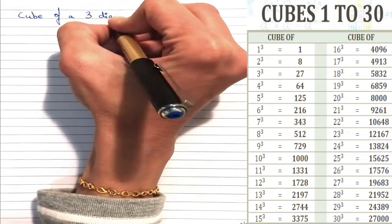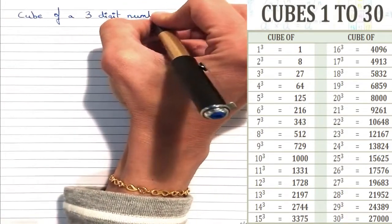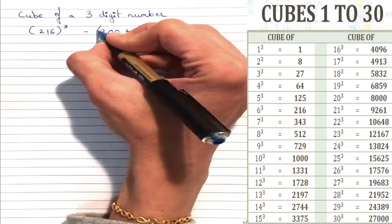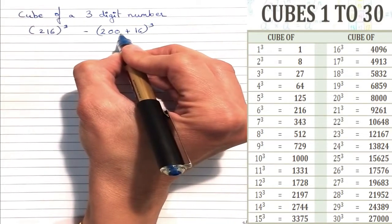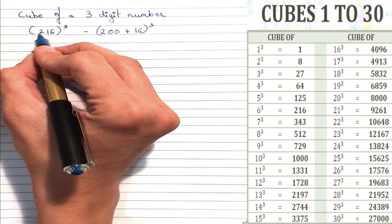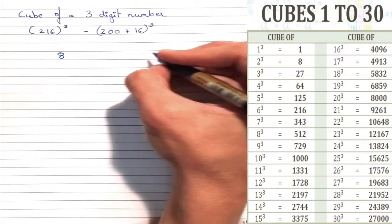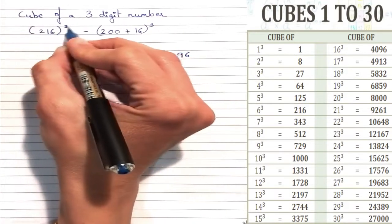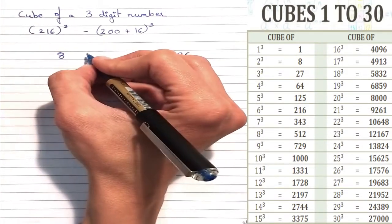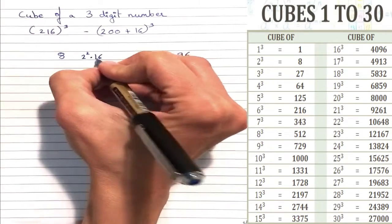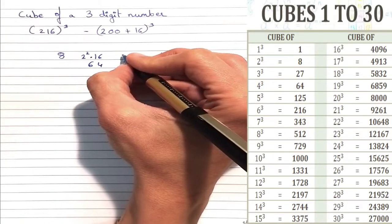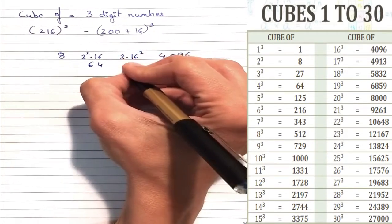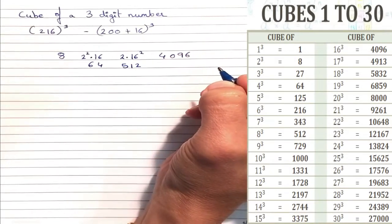Now let's see the cube of a 3-digit number with an example. We will find the cube of 216, which is nothing but (200 + 16)³. In the shortcut method, we avoid zeros, so we take 2³, which is 8, and 16³, which is 4096. For the middle numbers, we take a²b, which is 2² into 16 = 64, and ab², which is 2 multiplied by 16² = 512.